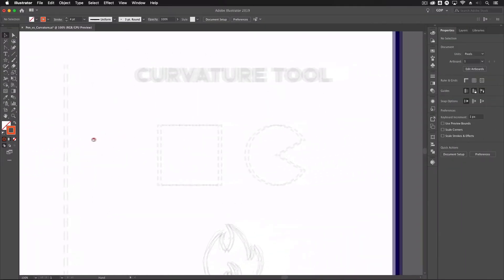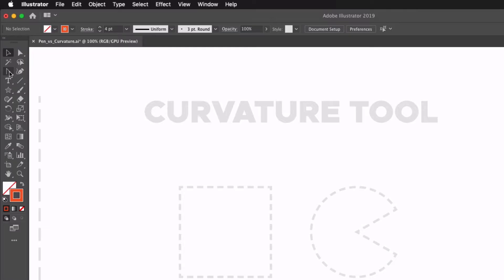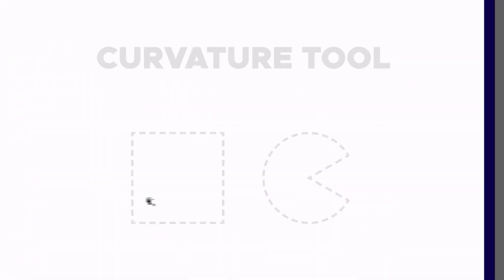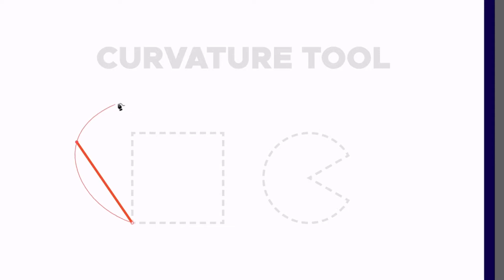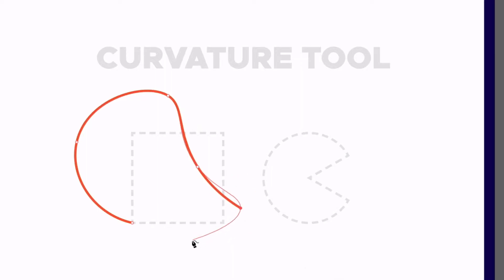Moving across, we're going to look at the curvature tool now. The curvature tool can be found right next to the pen tool. If I click once you'll see we don't get any preview line for the path until we click again. Once we do, we see a straight line, but if I move my cursor away we get a preview line for a curved path. What this tool does is essentially try to anticipate the best curve based on the anchor points you plot — if I just keep clicking, the path will continually adjust on both sides of each anchor point, trying to achieve optimal curvature between them.